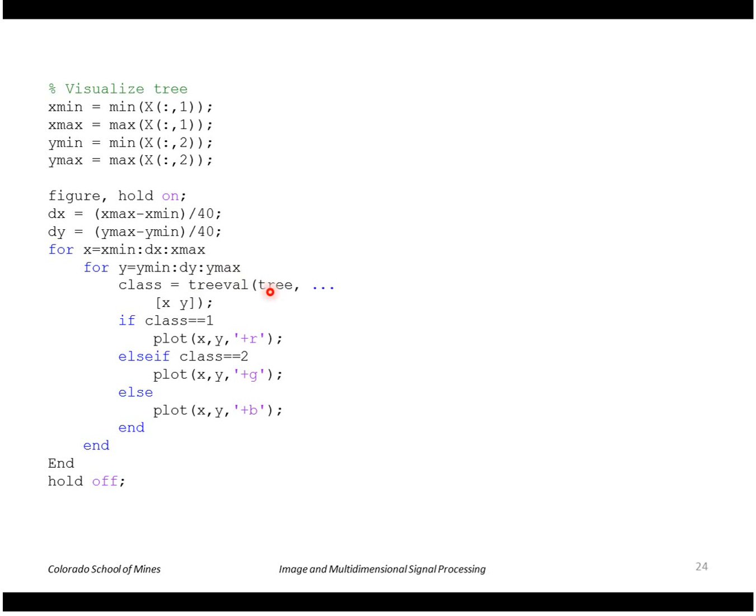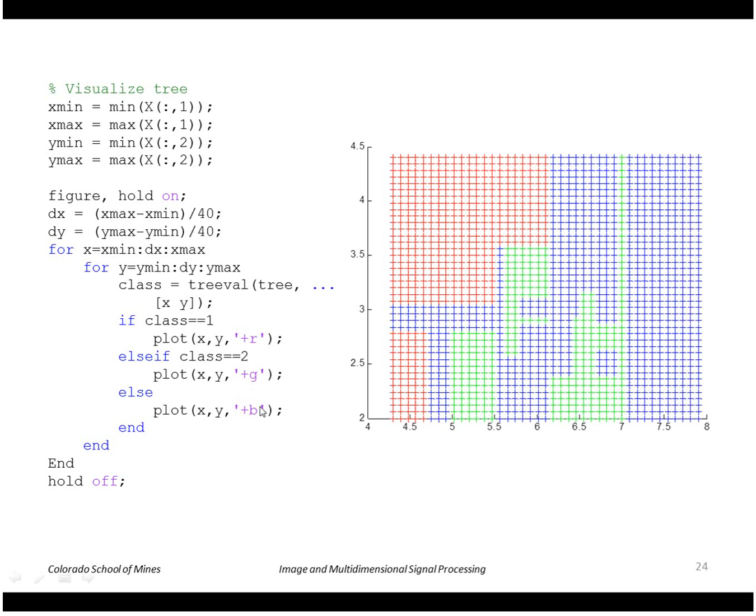This will evaluate the tree at this point and return the class that it's assigned to. If it's class one we'll plot a red dot, if it's two a green dot, and otherwise a blue dot.